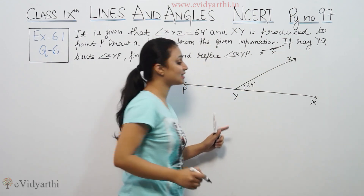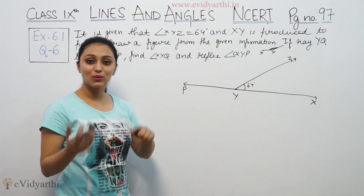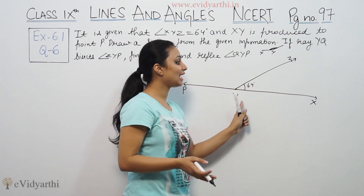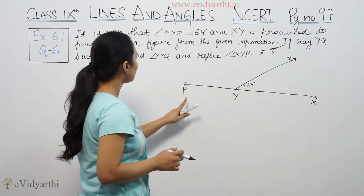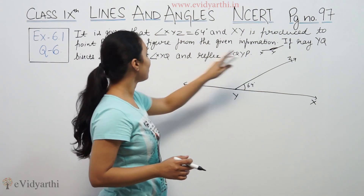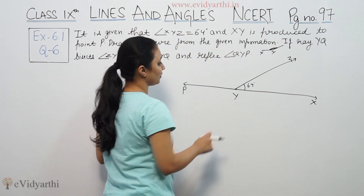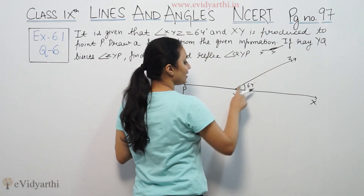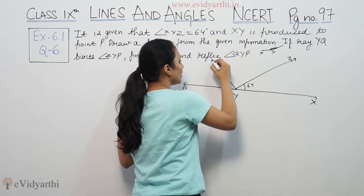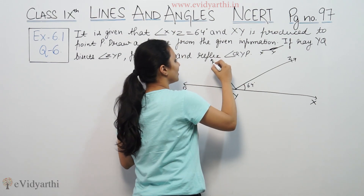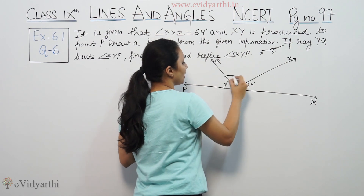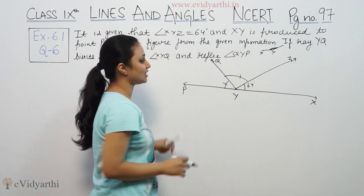64 degrees is an acute angle, so we have a small angle XYZ. XY is extended to point P. Ray YQ bisects angle ZYP, meaning it divides ZYP into two equal halves. So the two angles formed are equal.